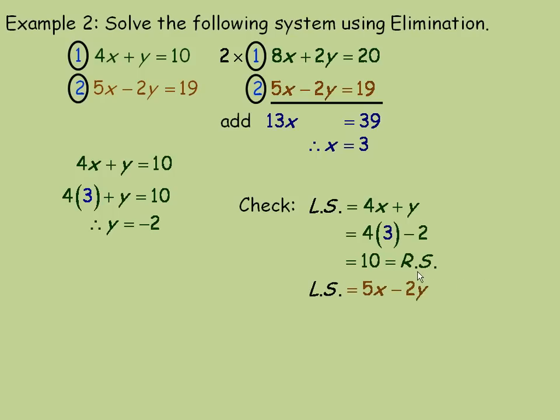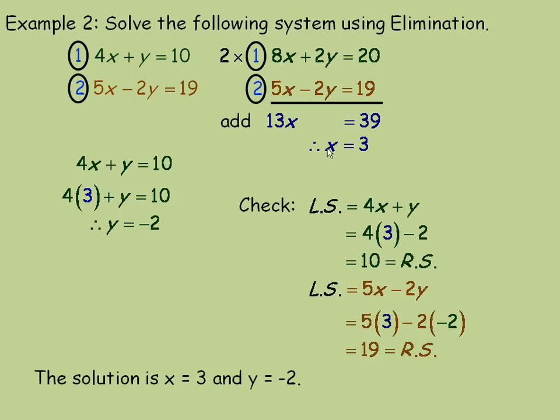Second equation, 5x minus 2y is what's on the left side. So again, we're going to put 3 in place of x. And then negative 2 in place of y. So 5 times 3 minus 2 times negative 2. 15, and this will be plus 4, is equal to 19. And so it checks. So our solution is x equals 3 and y equals negative 2.